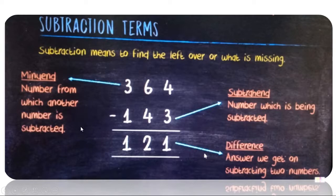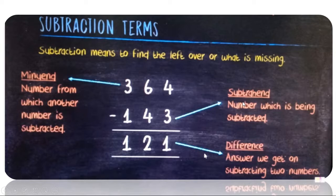If we subtract 143 from 364, the answer is 221. Here 364 is the minuend — it is the number from which the other number is subtracted. 143 is the subtrahend — it is the number which is being subtracted from the minuend. And 221 is the difference, which is the answer we got on subtracting two numbers.